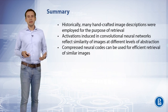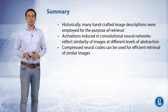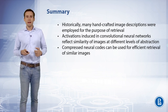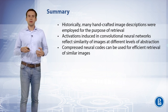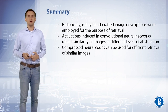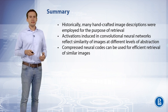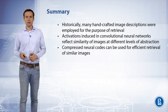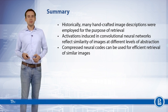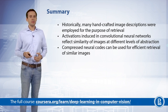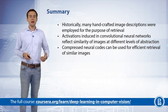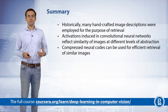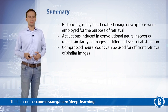To summarize: historically, many handcrafted image descriptors were employed for the purposes of retrieval. Activations induced in convolutional neural networks reflect the similarity of images at different levels of abstraction. We can compress neural codes for efficient retrieval of similar images, and this works even better than compressing state-of-the-art handcrafted descriptors.